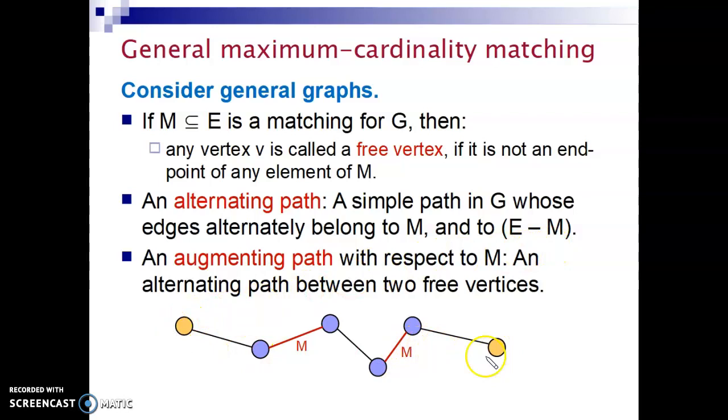So this is an alternating path. This edge does not belong to matching. This edge belongs to the matching. This edge does not belong to the matching. This edge belongs to the matching. And finally, this one does not. So from this yellow node all the way to this yellow node, this is a simple path and it's also an alternating path.